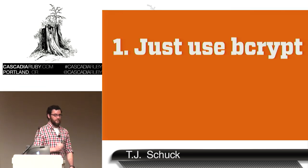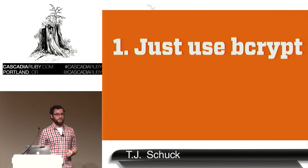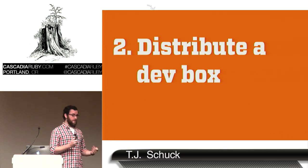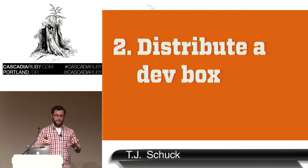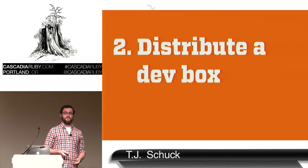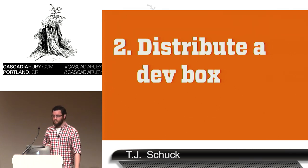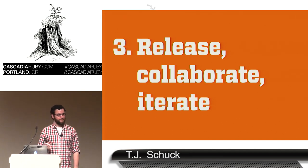So what have we learned? Number one: just use bcrypt. Just do it. It's easy, it's not that hard — talk to me afterwards if you want to go through this, we'll convert our passwords. Number two: distribute a dev box. If you have anything with complicated external dependencies, other people will be much more likely to collaborate, submit pull requests, and help you go forward if you make it easy for them. Also, if you have something with external dependencies, try rake-compiler-dev-box — it will help you cross-compile your gems without pulling your hair out. But most importantly, I want to encourage you to release, collaborate, and iterate. Thank you.